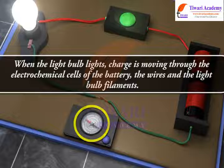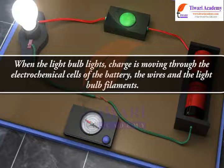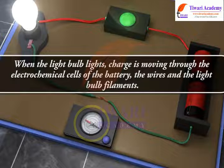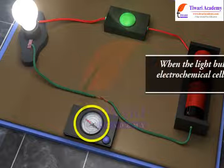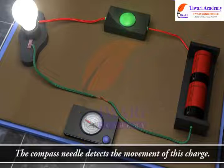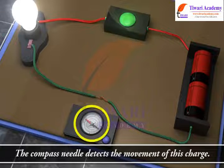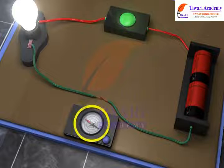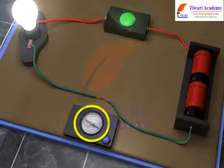When the light bulb lights, charge is moving through the electrochemical cells of the battery, the wires and the light bulb filaments. The compass needle detects the movement of this charge. It can be said that there is a current, a flow of charge within the circuit.